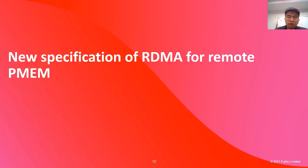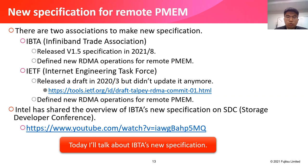Let me show the new specification of RDMA for remote P-memory. There are two associations making new specifications: IBTA and IETF. IBTA released V1.5 specification in August 2021, which defined new RDMA operations for remote P-memory. IETF released a draft in March 2020 but didn't update it anymore; it also defined new RDMA operations for remote P-memory. Intel has shown the overview of IBTA's new specification at the Storage Developer Conference. Today I will talk about IBTA's new specification.